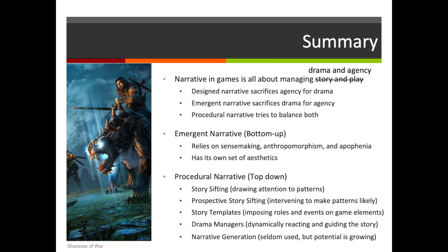In summary, what we've said in these three videos is that narrative in games is all about managing story and play — or more particularly, drama, getting an appropriate dramatic arc, and agency, allowing the player to make choices. Balancing the narrative paradox — the tension between these two things — is really what narrative in games is all about. Design narratives sacrifice agency for drama, emergent narratives sacrifice drama for agency, and procedural narratives try to balance both by intervening more gently or by trying to be as dynamic as possible and dealing with things that the player might do.